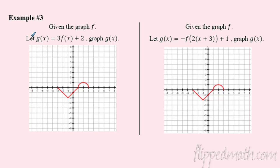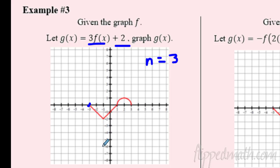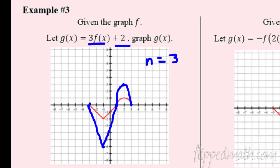Can we combine a dilation with a translation? Sure. I always like to stretch before I move — think of it like warming up for sports. So let's stretch first: I can see a scale factor of three, so all my Y values get three times as big. The point at zero stays there, negative two goes down to negative six, zero stays, one goes up to three times bigger. That stretches the shape — what was a semi-circle is now a stretched-out semi-circle.